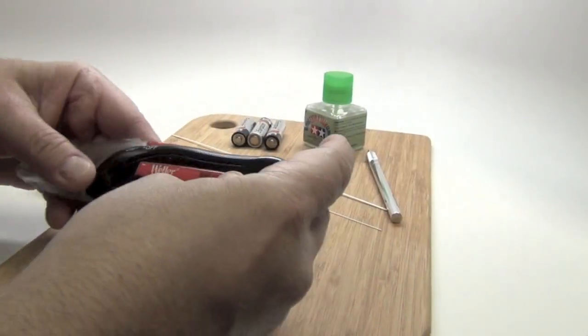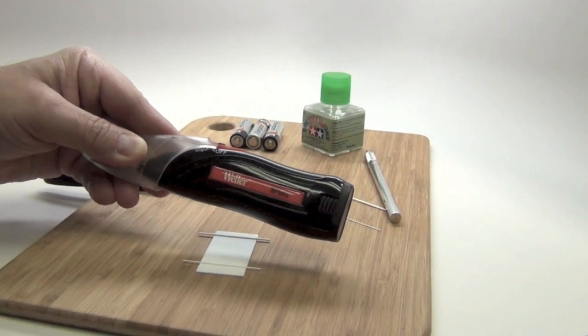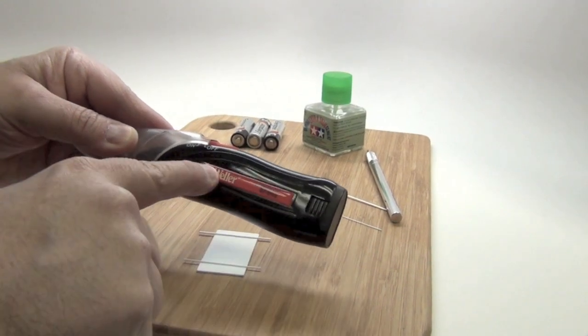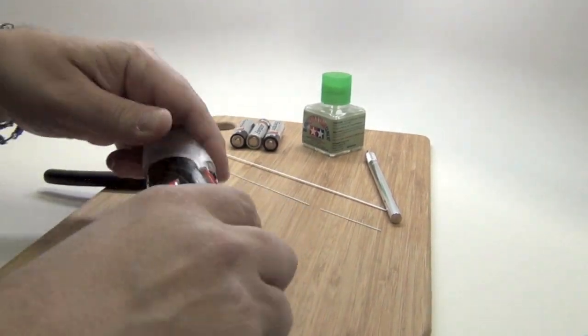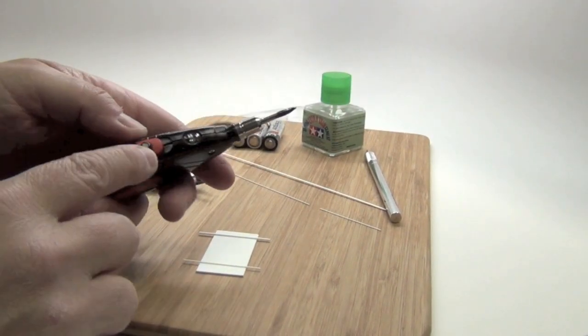So the other thing that you need, of course, is this handy dandy pen welding tool by, or pocket welding tool by Weller. I love this thing, I bought it at Home Depot, and make sure that you replace the batteries every so often.